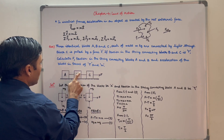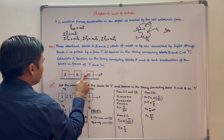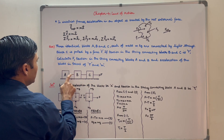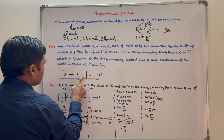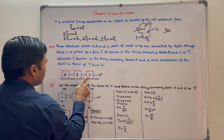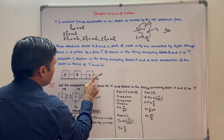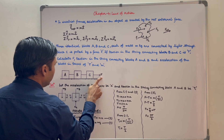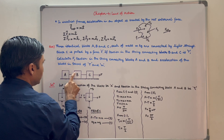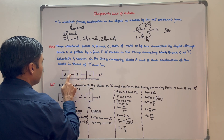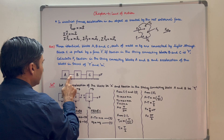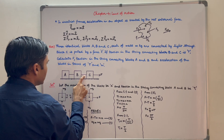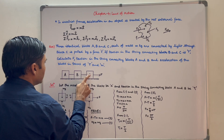These three blocks are identical. Their mass is m kg. They are connected with two light strings. Block C is pulled by force F. We have to calculate F, acceleration of these blocks, and tension in this string in terms of the tension in this string and mass of these blocks.